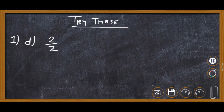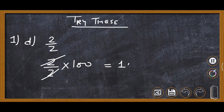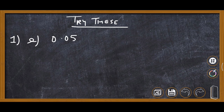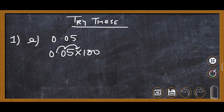Now we are going to convert 2 upon 2 as percent. So we multiply 2 upon 2 by 100. 2 is reduced by 2, giving 100, so the answer is 100%. Now for 0.05, we multiply it by 100. The decimal moves 2 places to the right, so 0.05 becomes 5%.